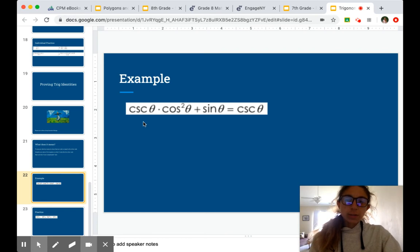So we've got csc theta multiplied by cosine squared plus sine of theta equals csc theta. Well, the more complicated side is the side that has more things on it. And that's usually how it goes.